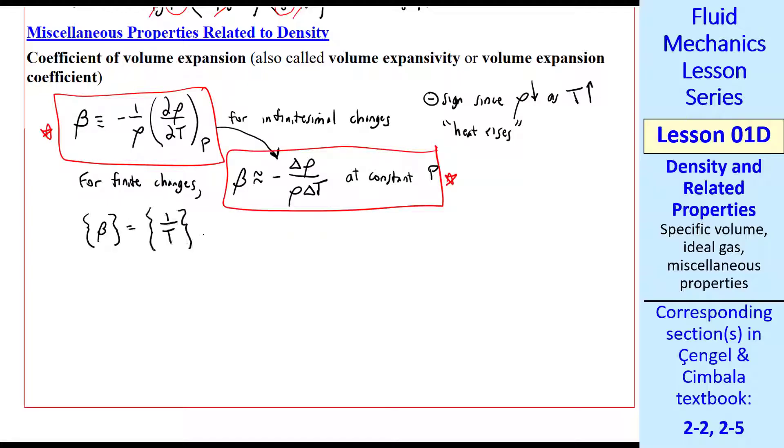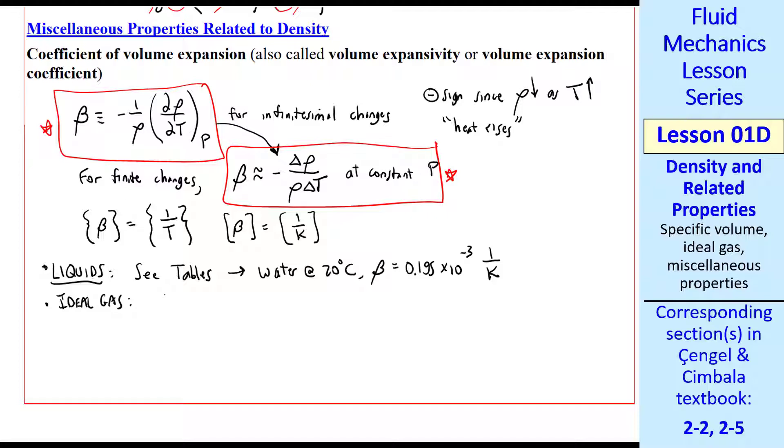If we're talking about liquids, there are tables for various substances that list beta. For example, water at 20 degrees C, we look up beta. It's 0.195 times 10 to the minus 3, 1 over Kelvin. For an ideal gas, p equals rho RT, solve for rho, p over RT.